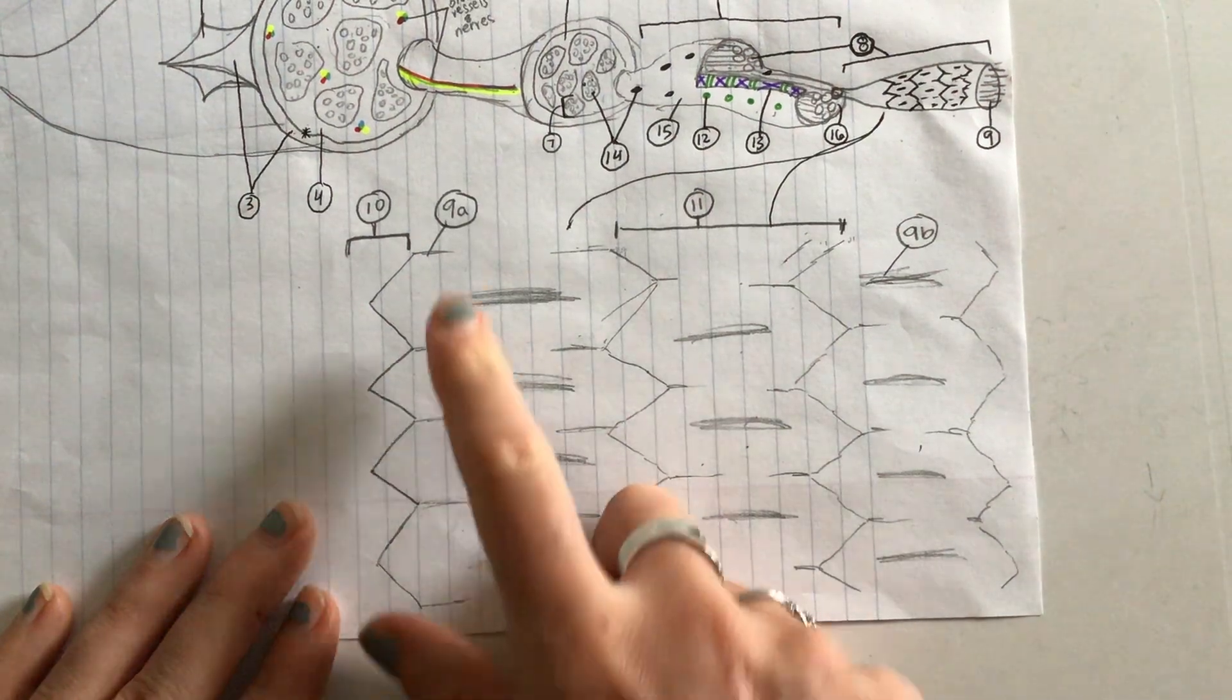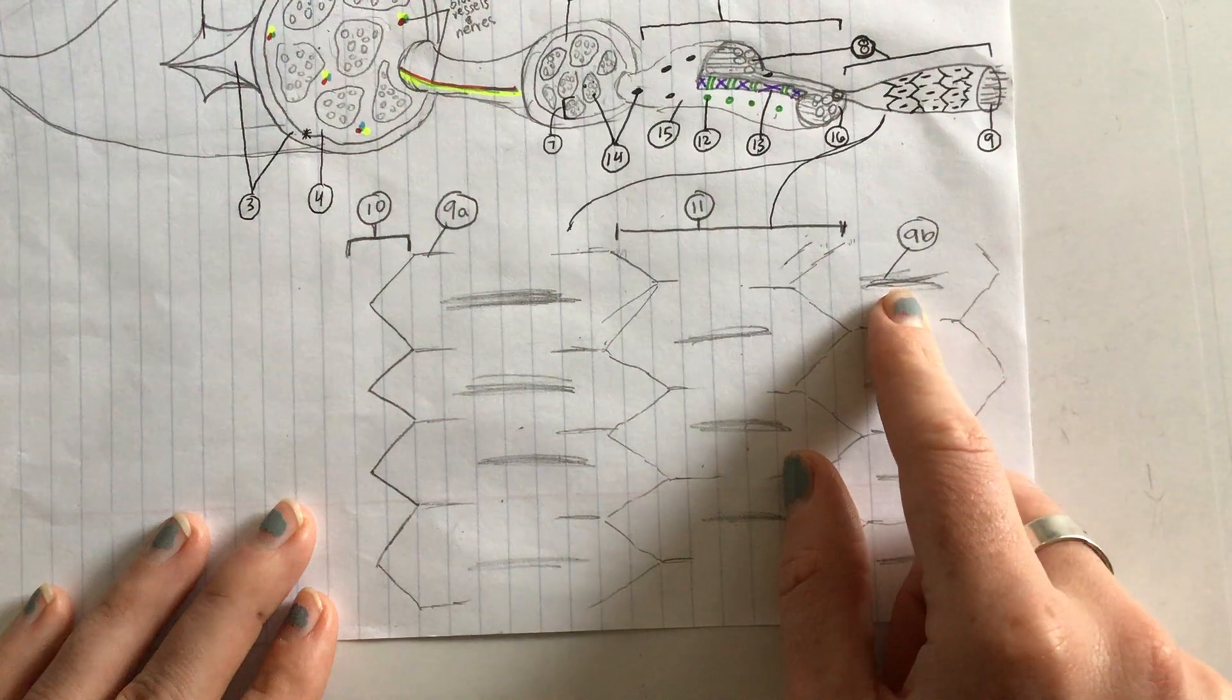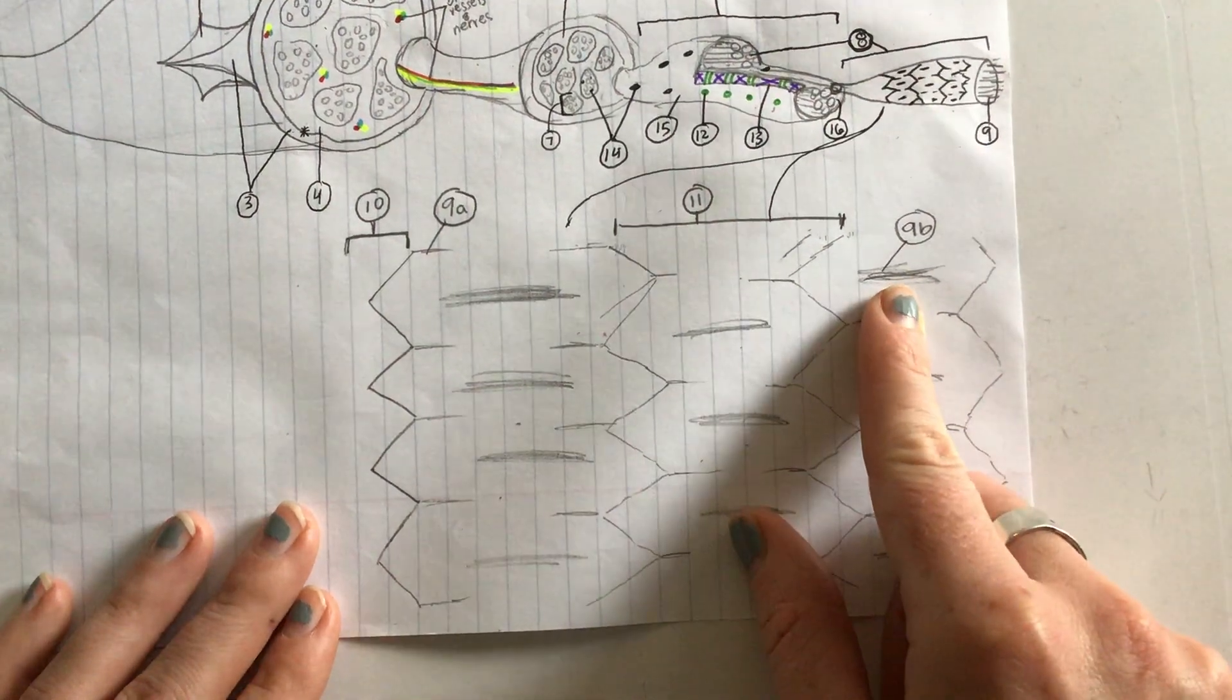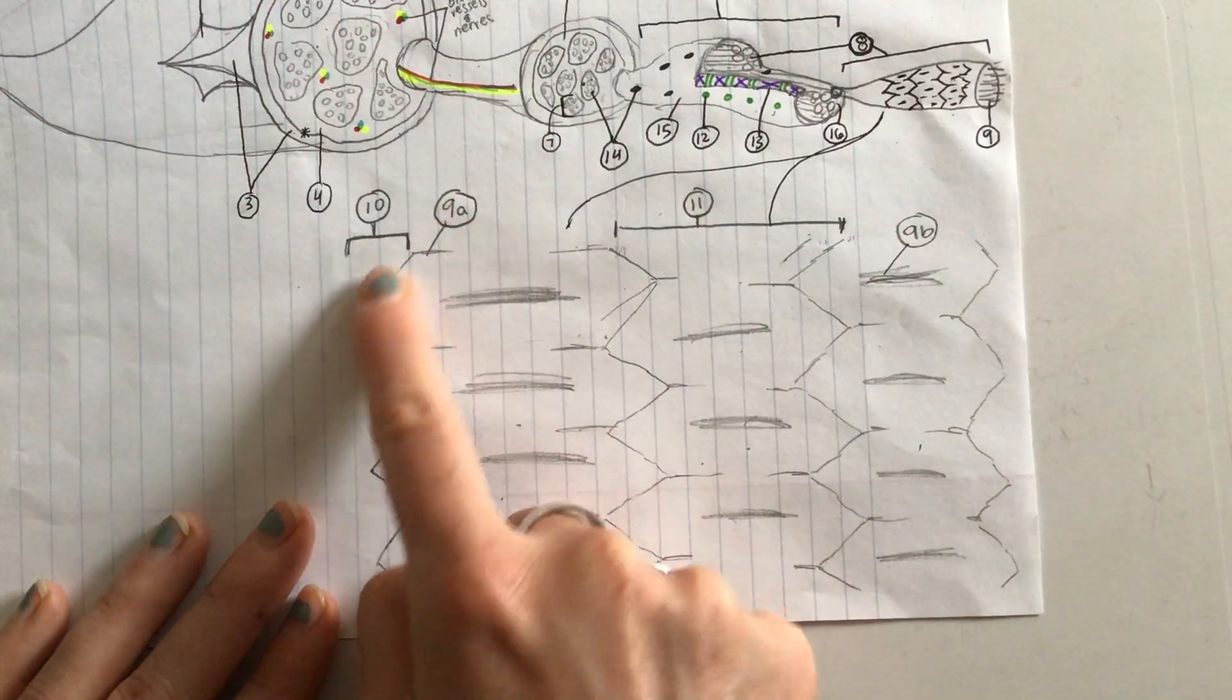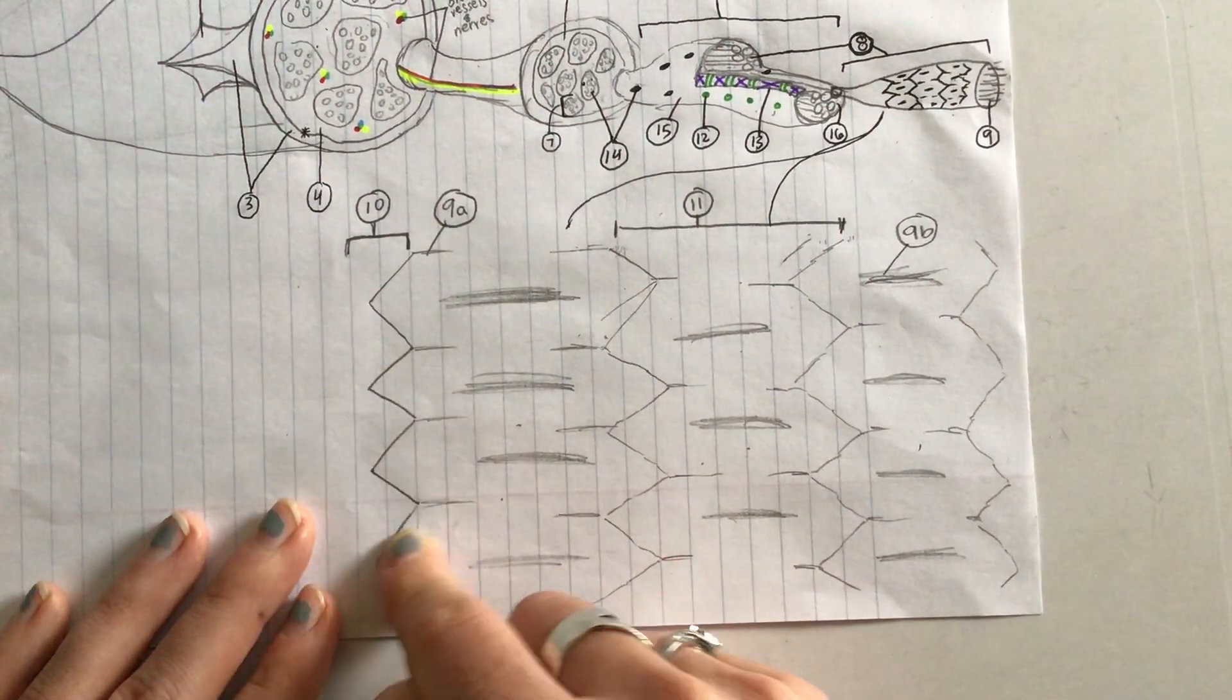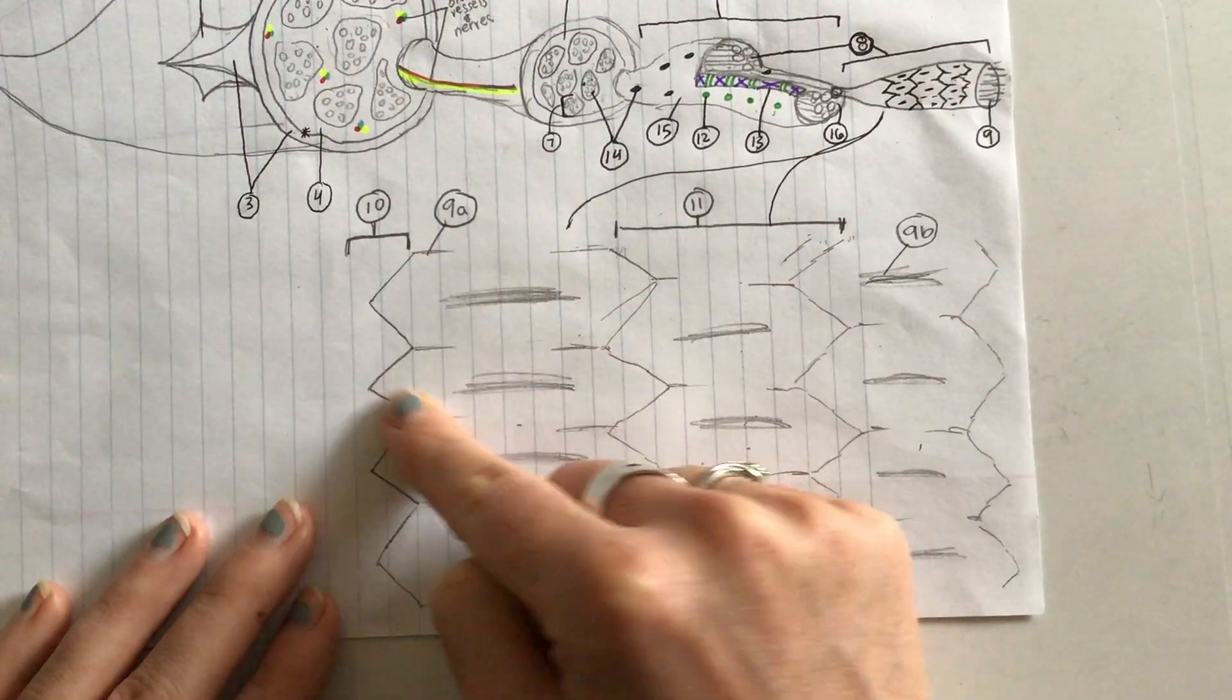Over here we have 9b labeling the thick filament. What is 9b? It is myosin. So here we see actin zigzagging, and we see it again over here. These zigzags of actin are labeled by number 10.